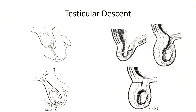Early in both male and female embryology, undifferentiated gonads develop along the posterior abdominal wall. At the same time, a connective tissue tract known as the gubernaculum also develops, anchoring the gonads to the antero-inferior portion of the abdomen. As fetal development progresses, the gubernaculum retracts, pulling the gonad in this antero-inferior direction. This retraction is much more pronounced in the male, resulting in the descent of the testes through the wall into the scrotum. Postnatally, the gubernaculum persists in the male as the scrotal ligament.